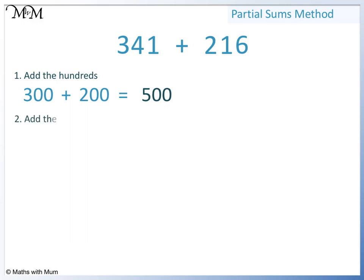Next we add the tens. 40 plus 10 equals 50. Now we add the ones. 1 plus 6 equals 7.